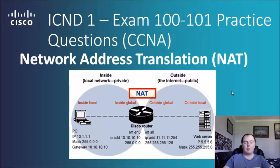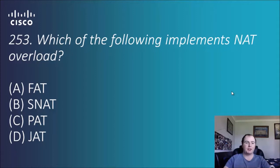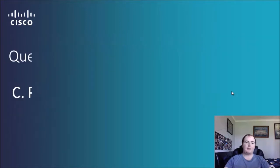G'day guys and welcome to another one of my Cisco videos — practice questions on network address translation today. This is going to be really fun. Question 253: which of the following implements NAT overload — FATS, NAT, PAT, or JAT? The answer is C, PAT — port address translation.